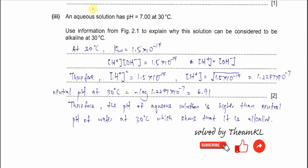Part 3: An aqueous solution has pH 7 at 30 degrees C. Use information from Figure 2.1 to explain why the solution can be considered alkaline at 30 degrees C. You must have one concept: pH for the neutral point is always different depending on the temperature. At 25 degrees C, the neutral point for water is 7. But now the temperature is 30 degrees C, no longer 25. The pH is still 7. We need to verify whether this pH is alkaline or acidic.